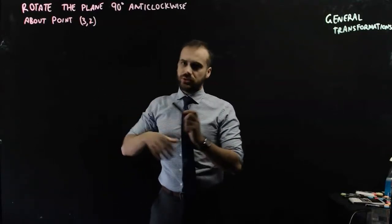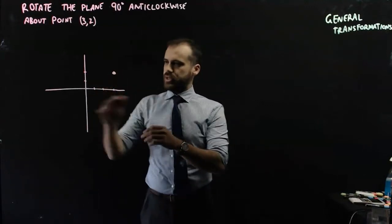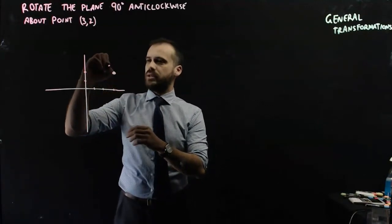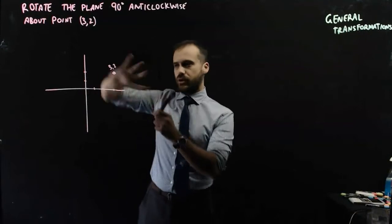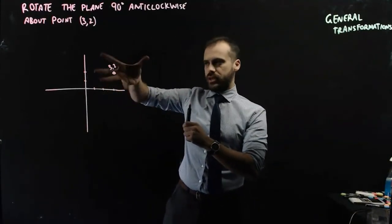Okay, let's just do a little drawing of that. So here's our Cartesian plane. Here's our point (3, 2). And we're going to rotate the plane around point (3, 2).